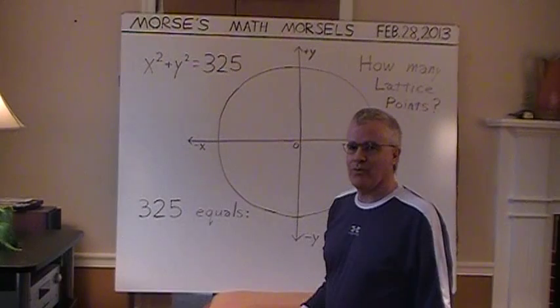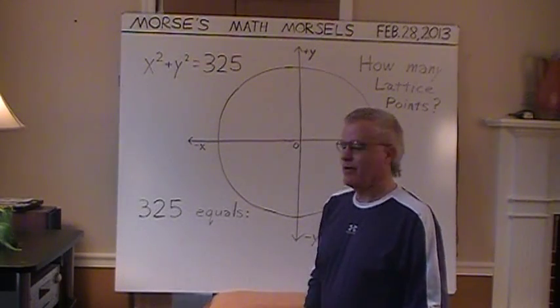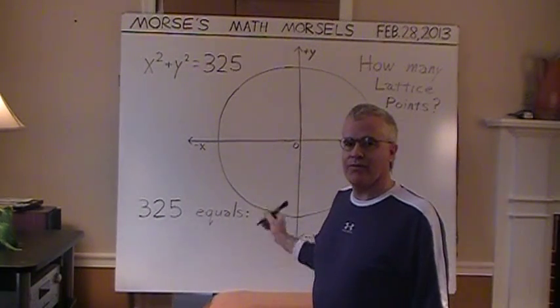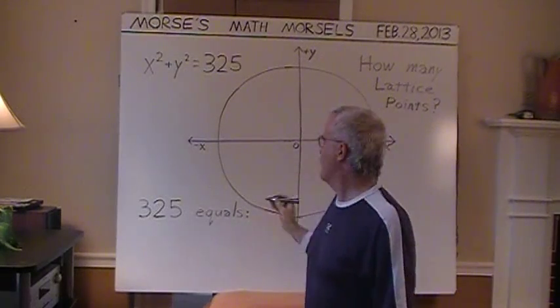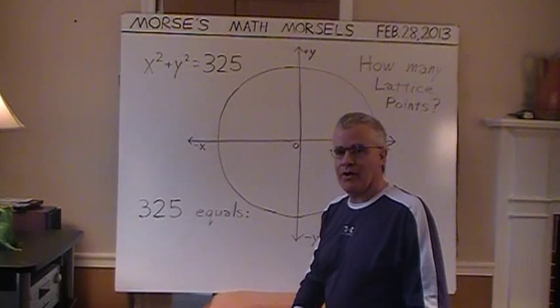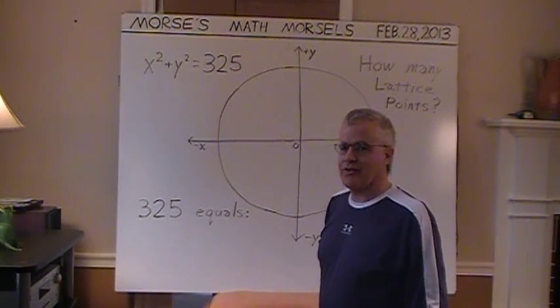For example, 1 comma 2 or negative 3 comma 5. So just wherever the grid lines, if this were on graph paper, cross. So if a point on a circle coincides with any crossing point of the straight lines of a grid, then that's just called a lattice point.